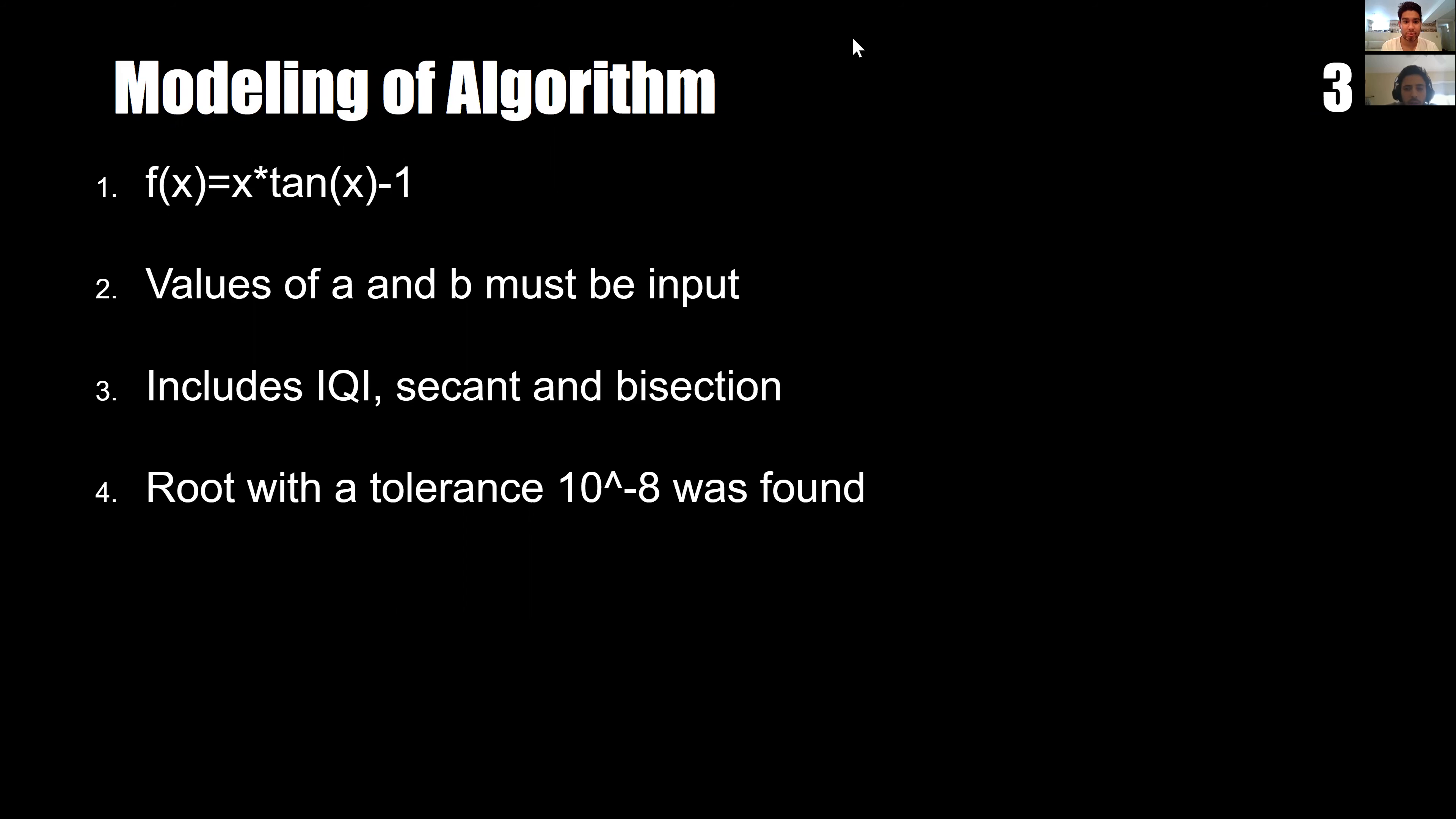How did we model the algorithm for Brent's method? First, we chose a function, and our function was x times sine of x minus one.